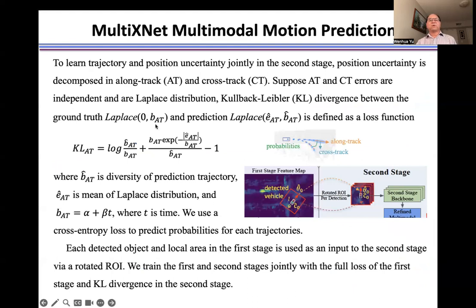We learn trajectory and position uncertainty jointly in the second stage. Position uncertainty is decomposed in along-track and cross-track directions. Suppose along-track and cross-track errors are independent under Laplace distribution. The Kullback-Leibler divergence between the ground truth and the prediction is defined as a loss function.